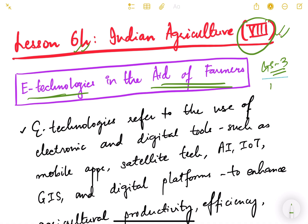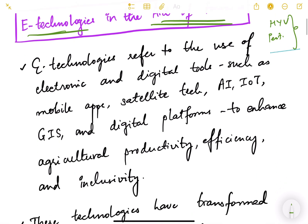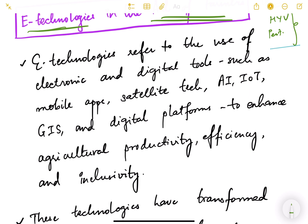When we talk about other technologies like high-yielding variety seeds, pesticides, and chemicals, those are also part of technologies — maybe biotechnology or other sciences. But here we will focus mostly on electronic and digital technologies that aid farmers. E-technologies refer to the use of electronic and digital tools such as mobile applications, satellite technology, AI, Internet of Things, GIS, and digital platforms.